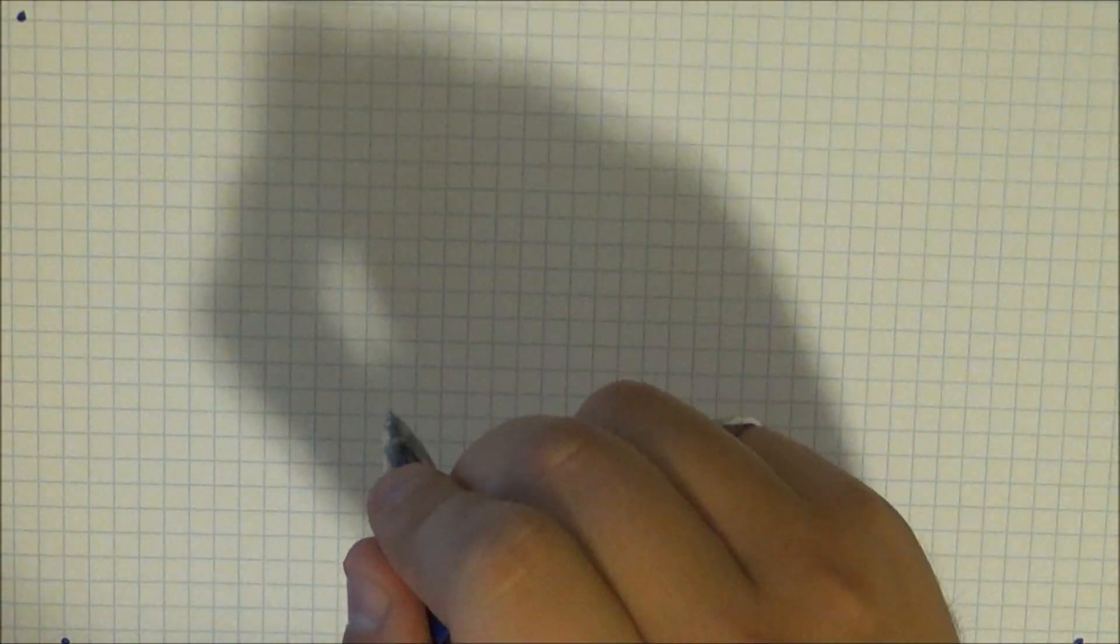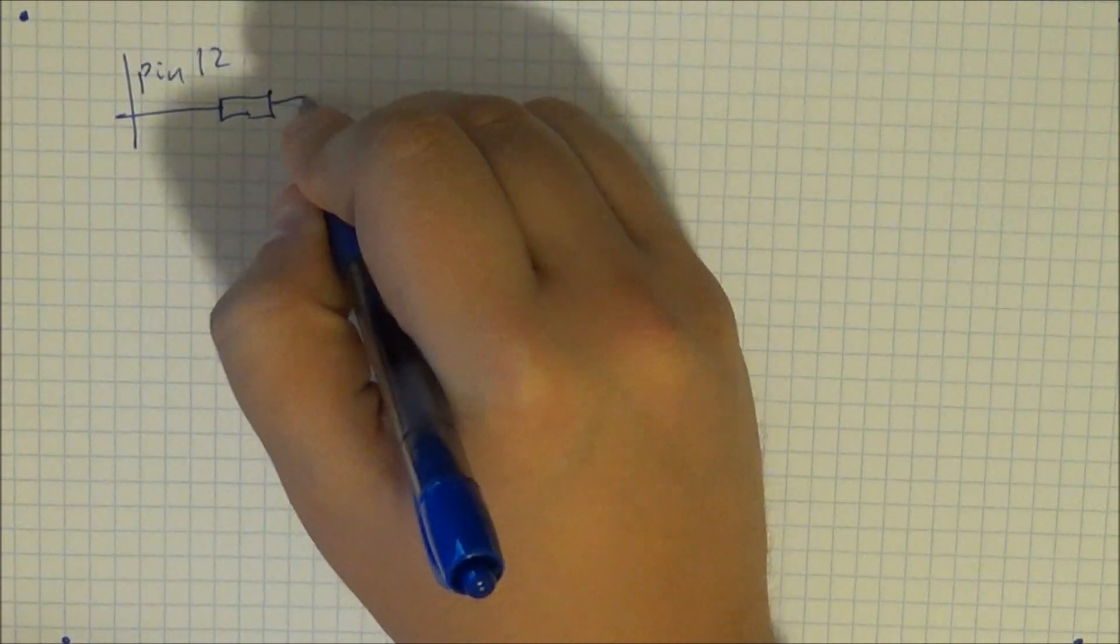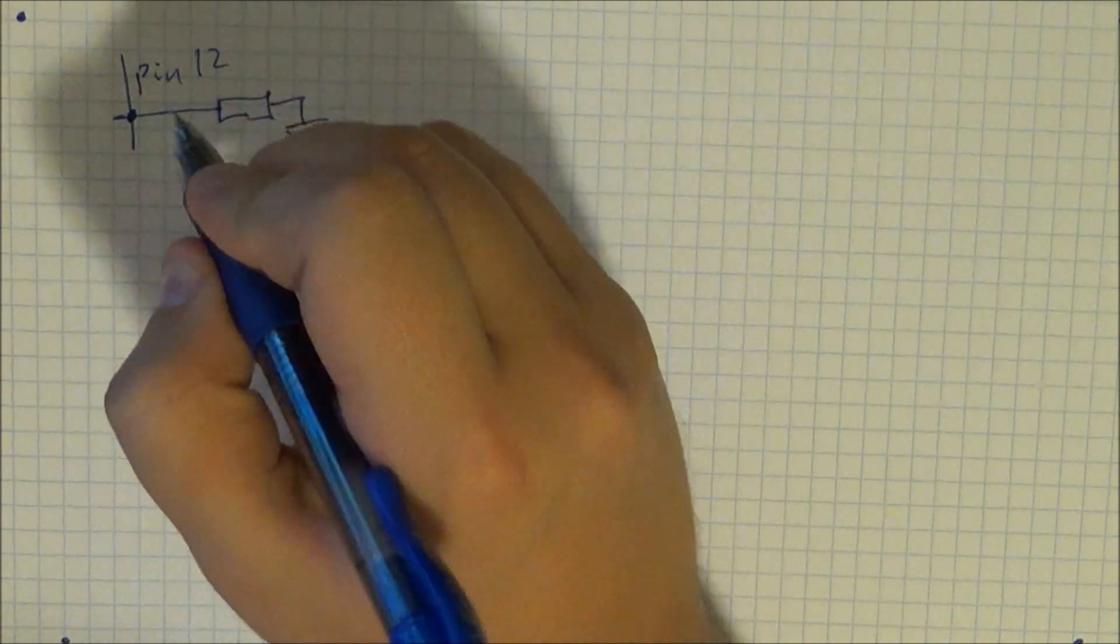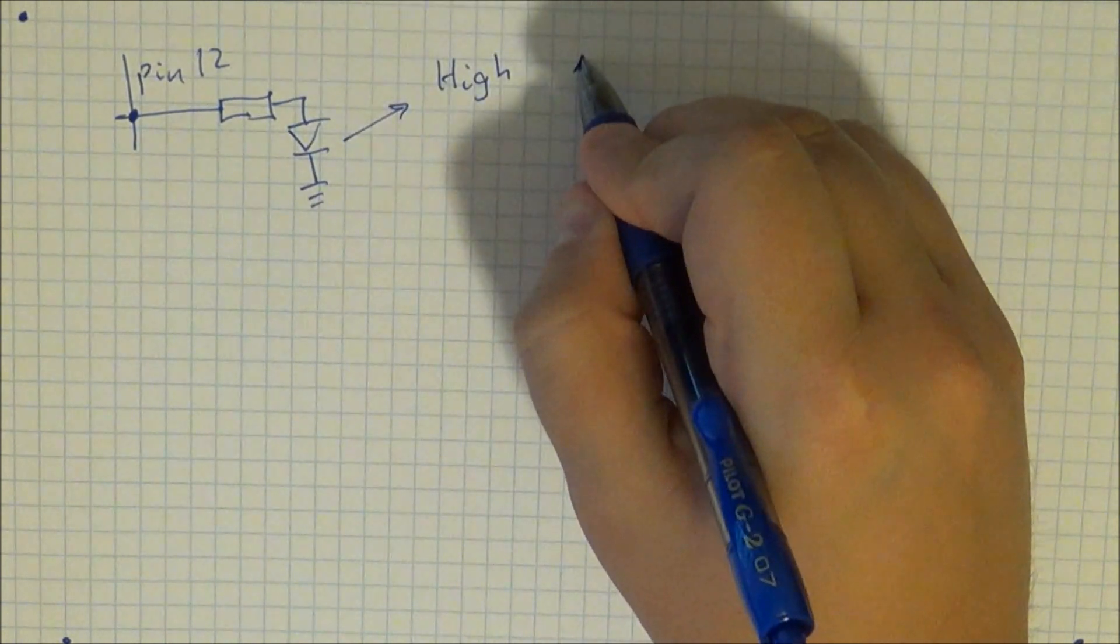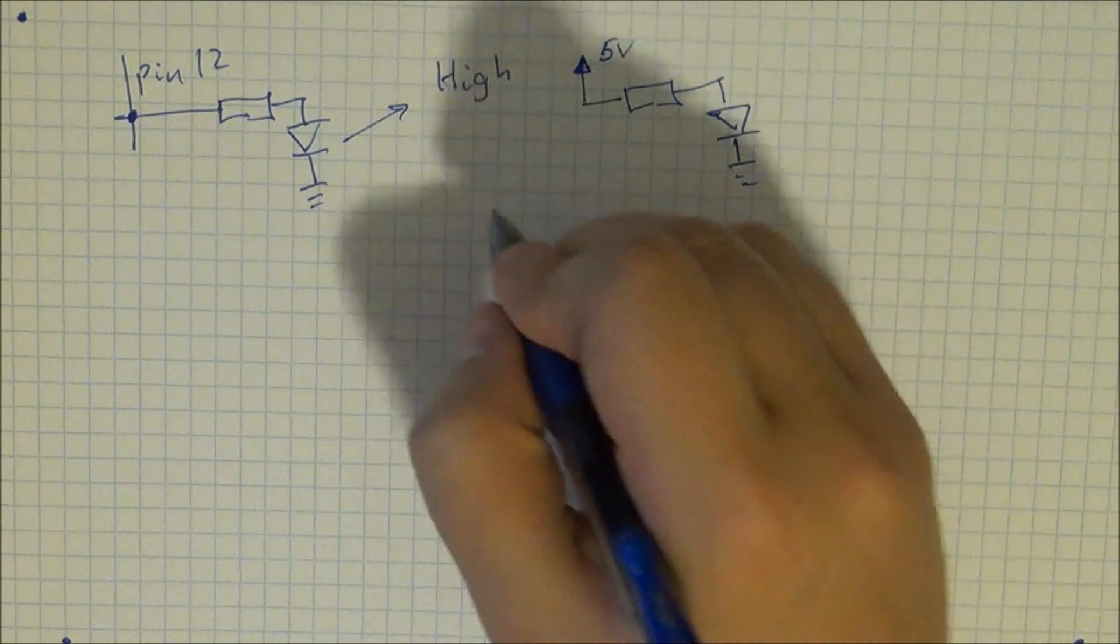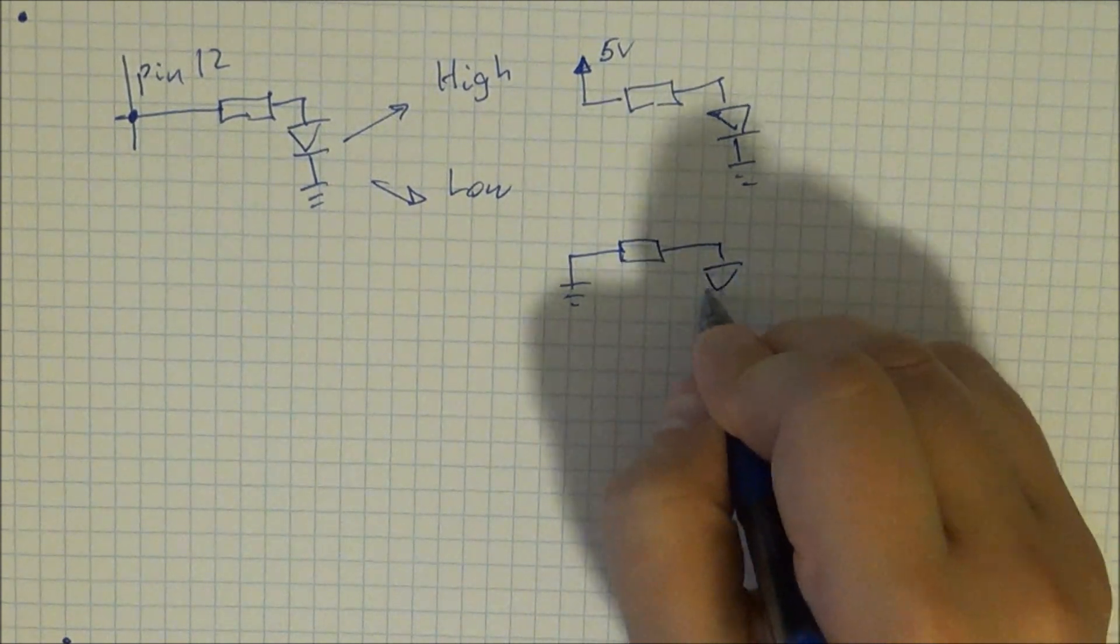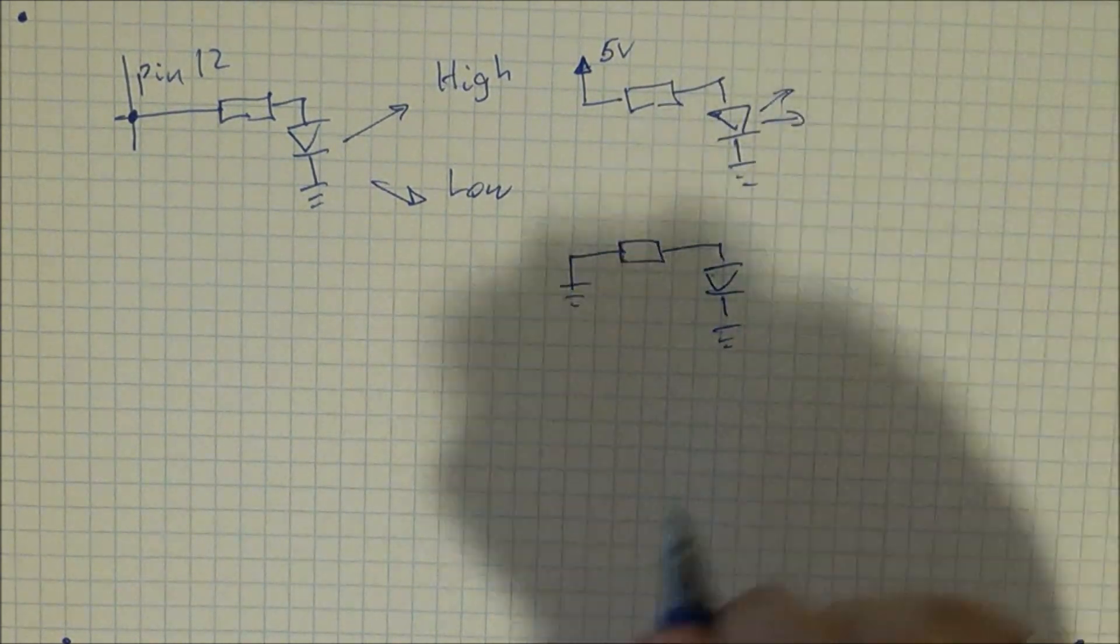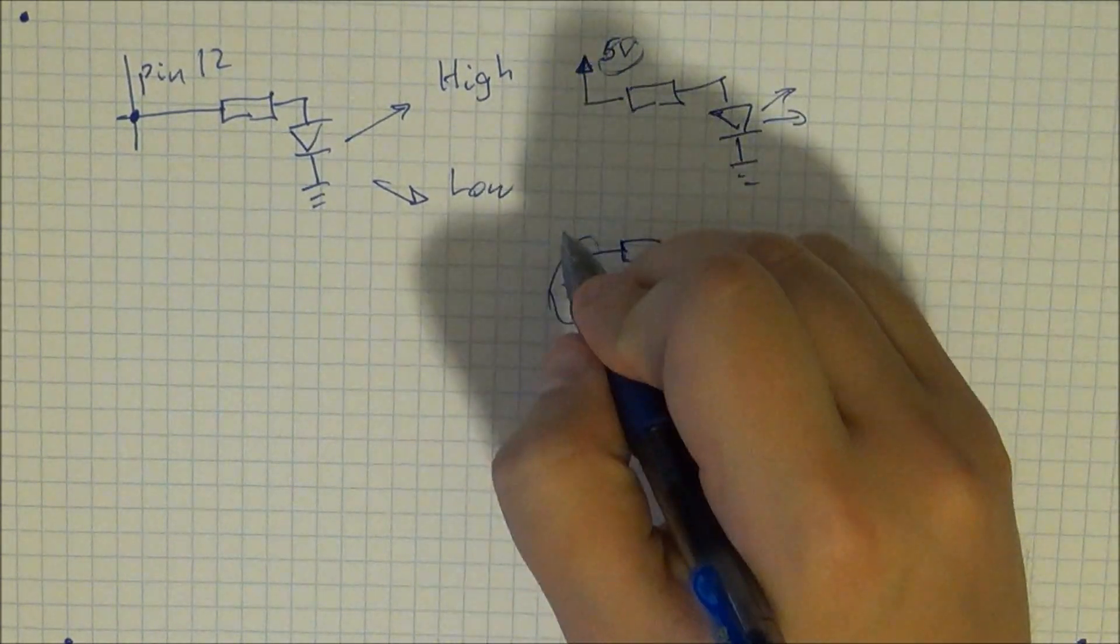Alright, so the first thing we are going to discuss is the second connection that we made which was pin 12 of the Arduino going through a resistor followed by an LED and a ground. So what exactly happens in this case? Well obviously if you set the pin to high you are sending 5 volts through the resistor to the LED to the ground and if you set it to low you get a ground followed by the resistor, the LED and the ground. So let's take a look at this 5 volts and this ground, 0 volts in this case.